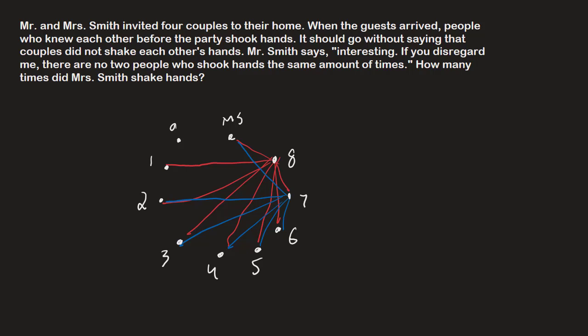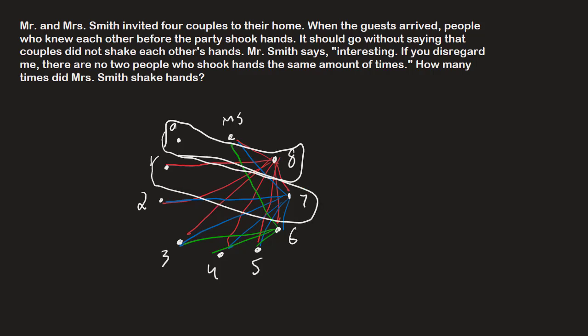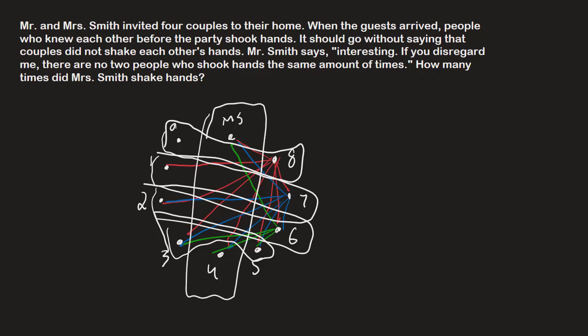We can continue this process — draw lines from person 6 to persons 3, 4, 5, with connections already to 7 and 8, and then to Mr. Smith. Now here's the interesting bit of information. Because person 8 shook hands with every single other person except person 0, it must be the case that person 0 and person 8 are married. For a similar reason, person 7 shook hands with everyone except persons 0 and 1. Since 0 is already married to 8, it must be that 1 is married to 7. We can continue this trend to find that 6 is married to 2, and 3 is married to 5, which means 4 and Mr. Smith are married — so 4 must be Mrs. Smith.